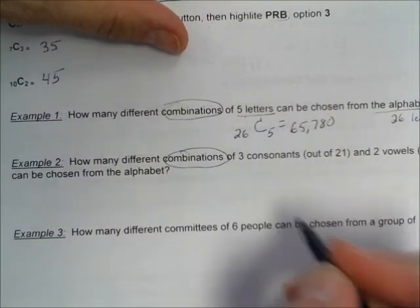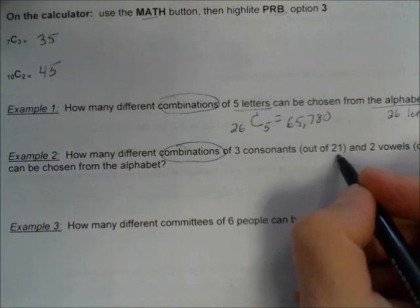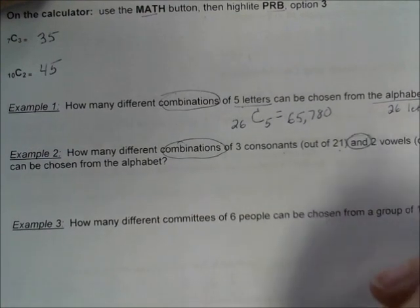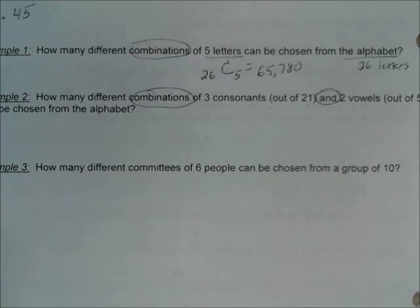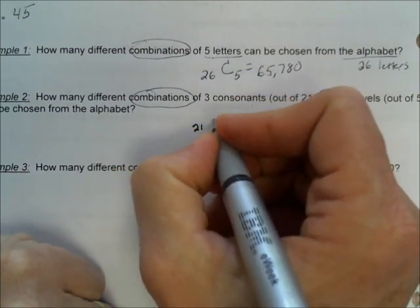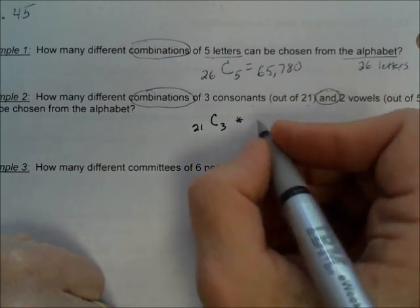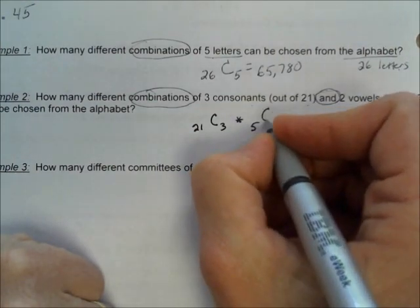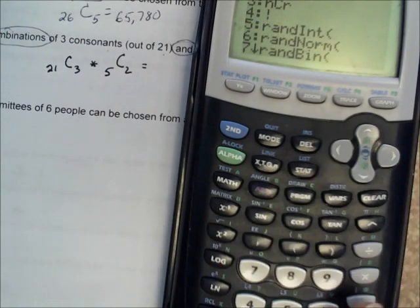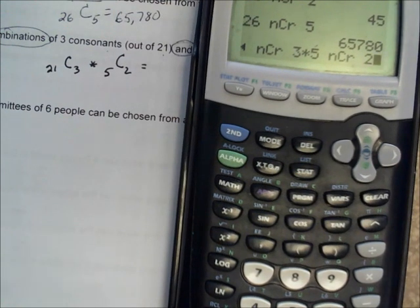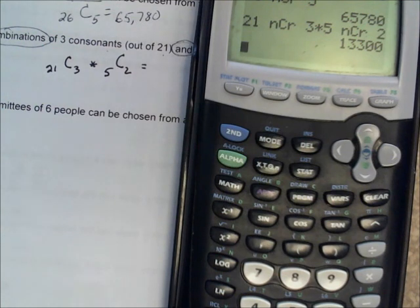How many different combinations of three consonants out of 21 consonants and two vowels out of five vowels can be chosen? If you want combinations of three consonants out of 21, you do 21 choose 3. And 'and' means multiply when it comes to probability, so we're going to multiply that by 5 choose 2, since we have five vowels to choose two from. So: 21, math, PRB, NCR 3, times 5, math, PRB, NCR 2. That gives 13,300.